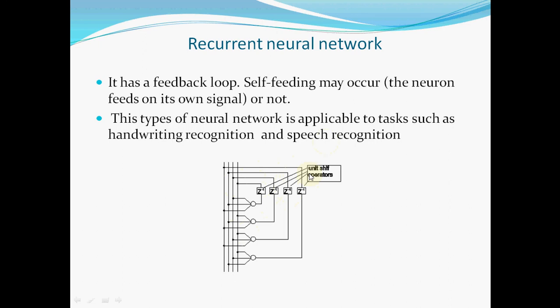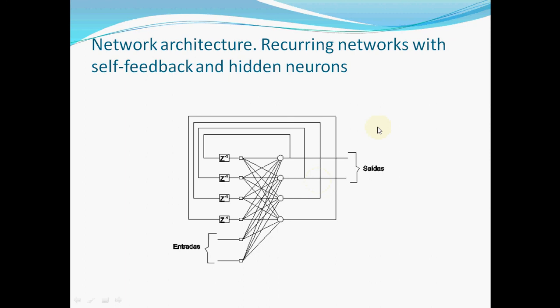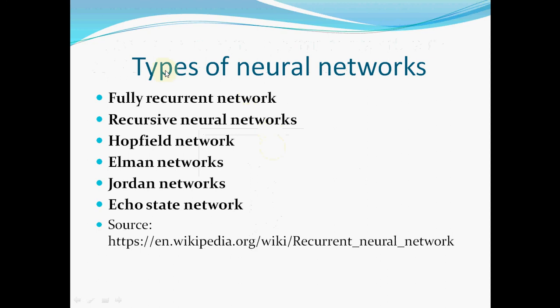We can see the unit shift operators. Each output returns back to the inputs of the neurons through the unit shift operators. This is another type of recurrent network with self-feedback and lateral neurons. The most common types of neural networks are: fully recurrent networks, recursive neural networks, Hopfield networks, Elman networks, Jordan networks, and Echo State networks.